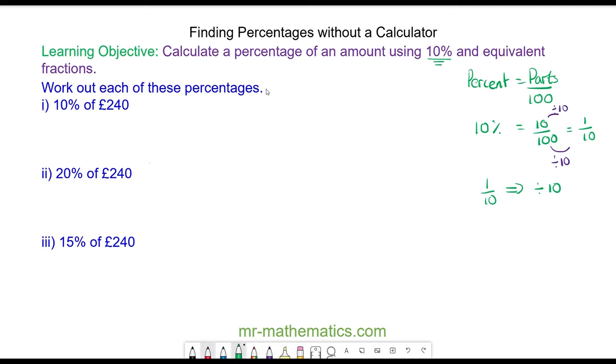Now we're going to work out 10% of £240. Well, we know 10% means divide by 10, so it's going to be £240 divided by 10, and this is £24.